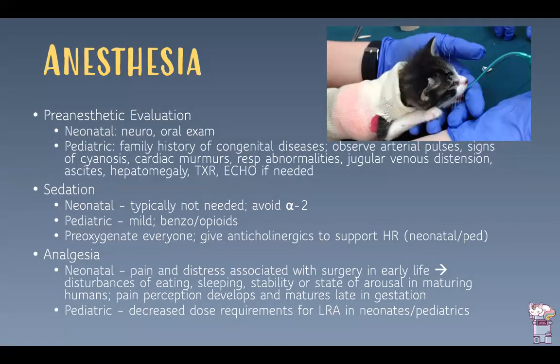A pre-anesthetic evaluation is important. In very young neonates, perform a neurologic exam and oral exam to check for cleft palate. In pediatric patients, look into family history of congenital diseases, assess arterial pulses, look for signs of cyanosis, listen carefully for a murmur, evaluate respiratory rate and effort, and look for jugular venous distension, ascites, and hepatomegaly. Obtain thoracic radiographs and an echocardiogram if indicated.